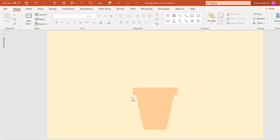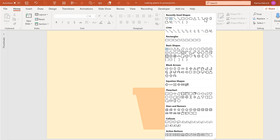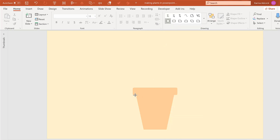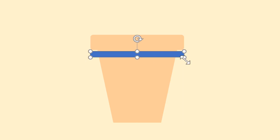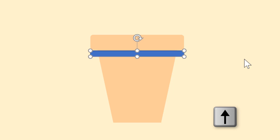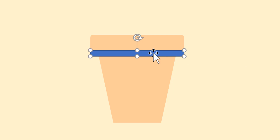Now I want this shape to have a shadow underneath the lip of the pot. I'm going to do this using a rectangle — draw it out under here, then use the up arrow key on the keyboard to line it up with the lip of the pot.